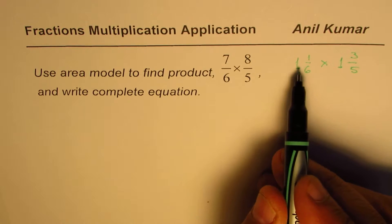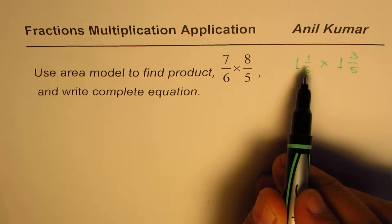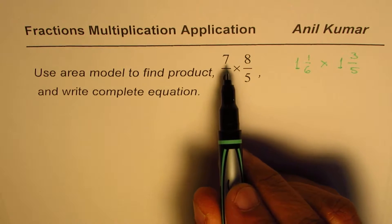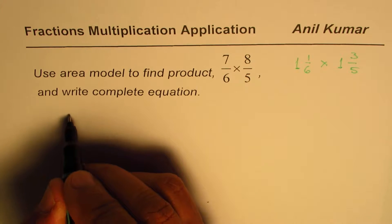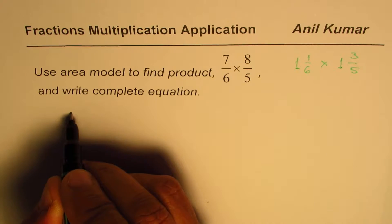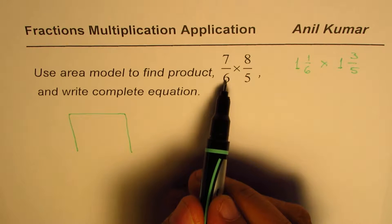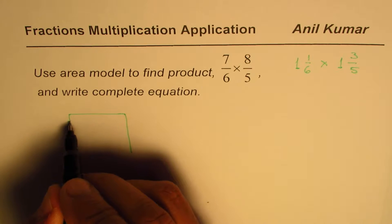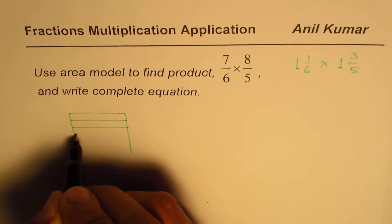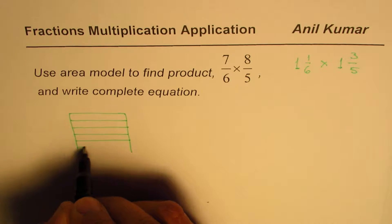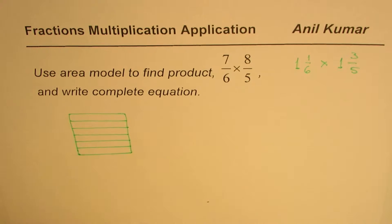So one box will represent a whole. The second box will represent 1/6. So that will be for the first fraction. So let us make two boxes to represent 7/6. So here they are. So what I do normally, as you know, I kind of keep it open and I'll divide it into 6 rows, right? So here we have 1, 2, 3, 4, 5, and 6.